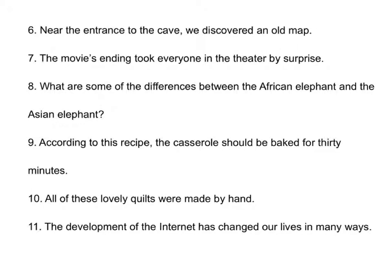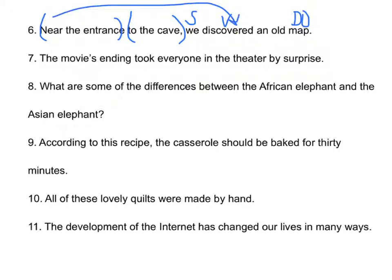Looking at the second half of the page, sentences 6 through 11. 'Near the entrance to the cave, we discovered an old map.' Marking our prepositional phrases. 'Discovered' is the verb — who discovered? We. We discovered what? A map. 'Near the entrance' — we discovered near the entrance, modifying the verb: adverbial phrase. 'To the cave' — it's the entrance to the cave, so it modifies 'entrance,' which is a noun: adjectival.